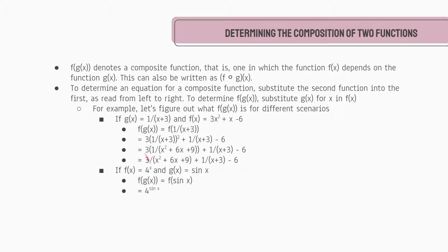If those graphs overlap perfectly, that means you solved the question correctly. For our second example, it is actually super simple. We have f(x) = 4^x and g(x) = sin(x). Since f(x) is our outer equation and g(x) is our inner equation, we substitute sin(x) for x in f(x). We get f(sin(x)), and 4^x now becomes 4^(sin x). Again, you can put this into Desmos and check whether it's correct.